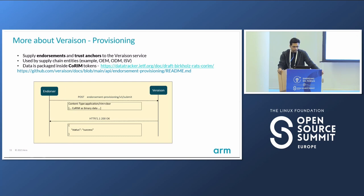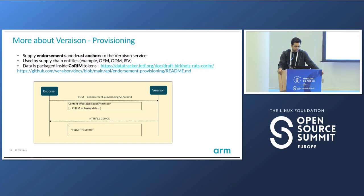During the provisioning stage, the endorser — which could be anyone like a manufacturer who wants to endorse the device — sends the request to the Veraison service to submit the reference values. It's a bundle in CORIM format, which is also an IETF draft specification. All the claims are bundled in this CORIM token. This is how you provision the CORIM token into the Veraison service and get back an OK result if everything goes through well.